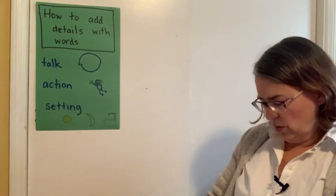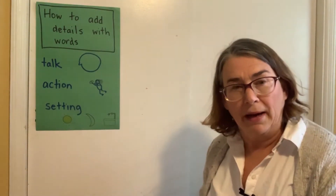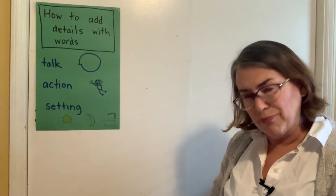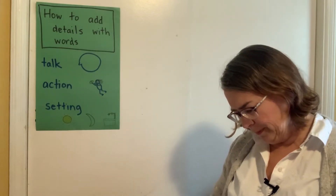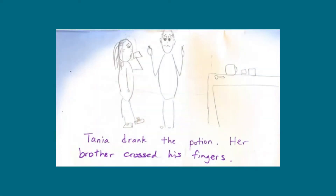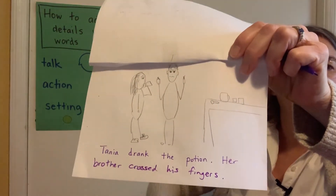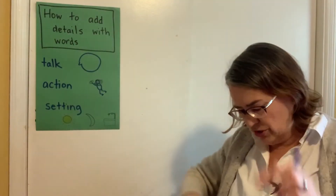So let's think here. If Tanya's drinking the potion, she's probably a little bit scared, right? Because she's putting something in her body — it's magical, she's never done it before. And her brother, he's kind of hoping it works. So maybe I'll write that her brother crossed his fingers hoping it would work. 'Tanya drank the potion. Her brother crossed his fingers.' I'm showing an action that he did to show that he's hoping it works.